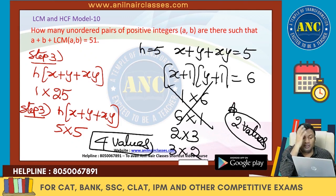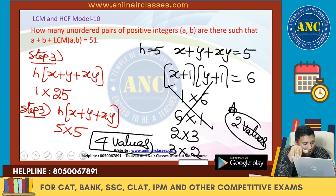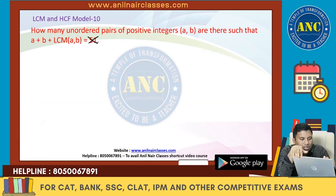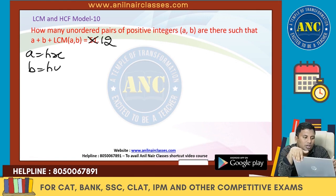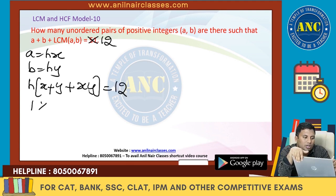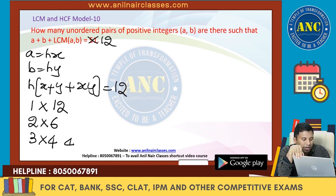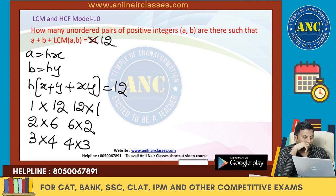Now I will do the previous question, which is 12. Very easily you will understand it — two values here, two values there. This is 12. A is HX, B is HY. This becomes H into (X plus Y plus XY) equivalent to 12, which gives factor pairs: 1 into 12, 2 into 6, 3 into 4, 4 into 3, 6 into 2, 12 into 1. We are doing ordered pairs only.